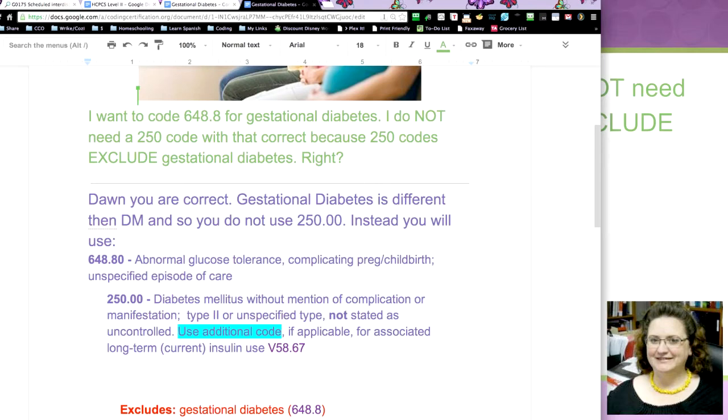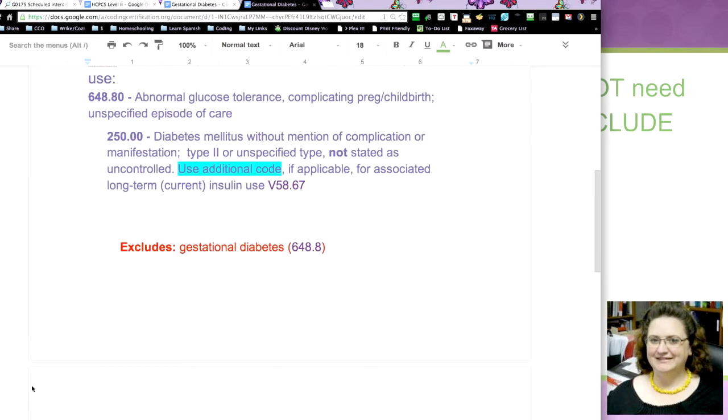Now, if you go to 250.00, which is your normal type 2 diabetic code, you will see that it has an excludes and there's an excludes for several things, but I got rid of everything except for gestational diabetes and it even tells you 648.8 is where you want to go to look for the proper code if it's gestational diabetes.